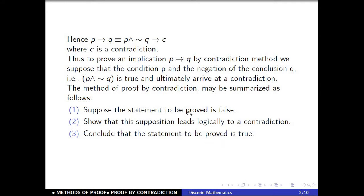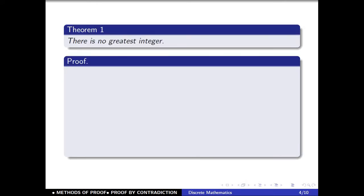These are the three steps of proof by contradiction. Now let's look at some examples. The first theorem — the result we have — is: there is no greatest integer. We will prove this by the contradiction method. So suppose that there is a greatest integer n. Our theorem statement is 'there is no greatest integer,' so we take the false statement 'there is a greatest integer' and show it leads to a contradiction, from which we conclude the statement is true.